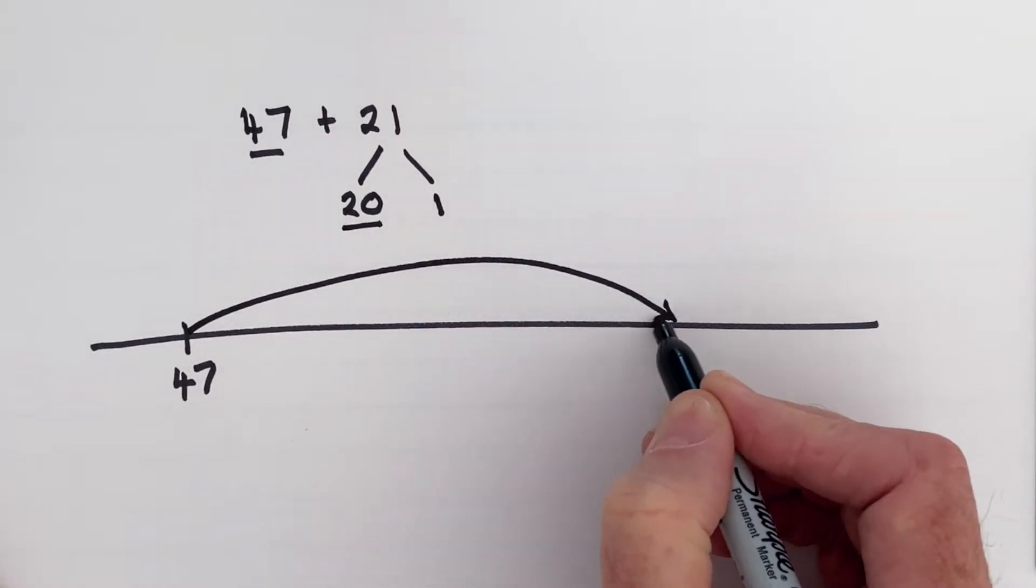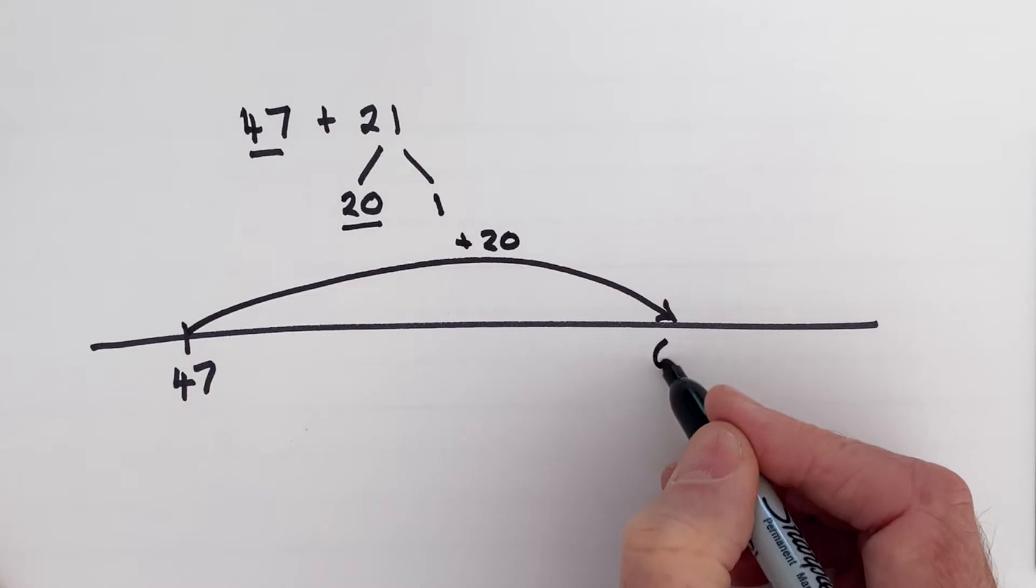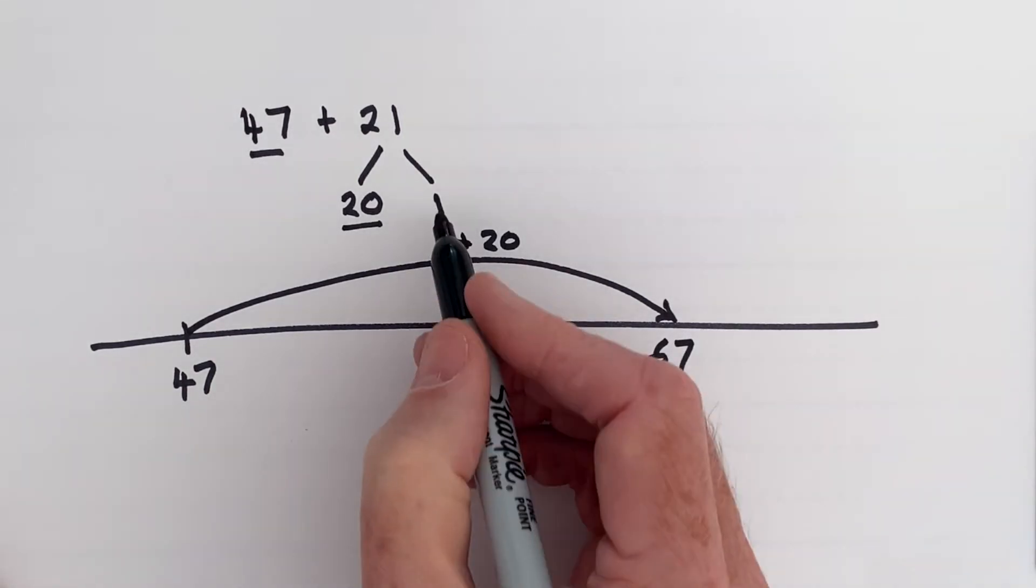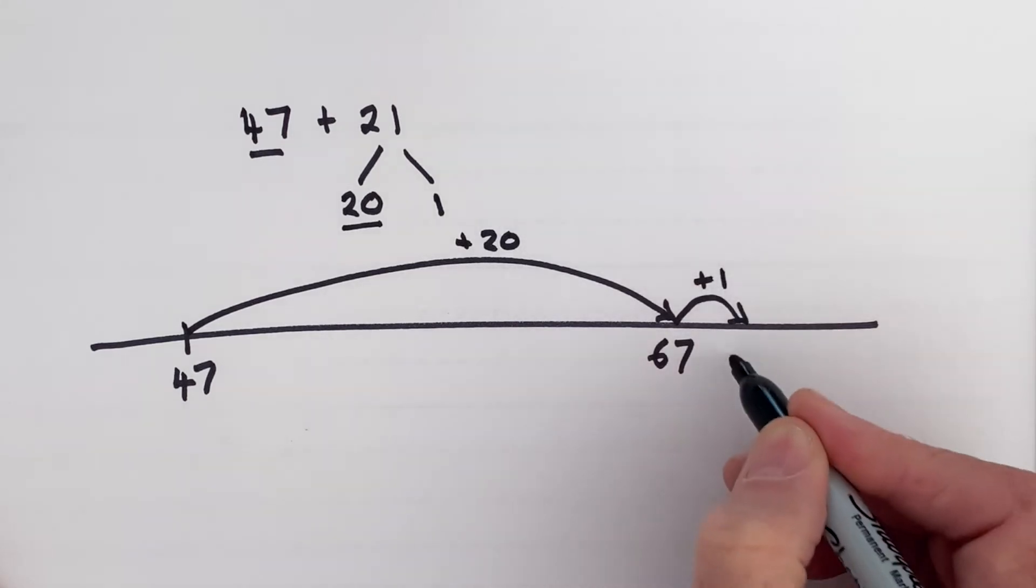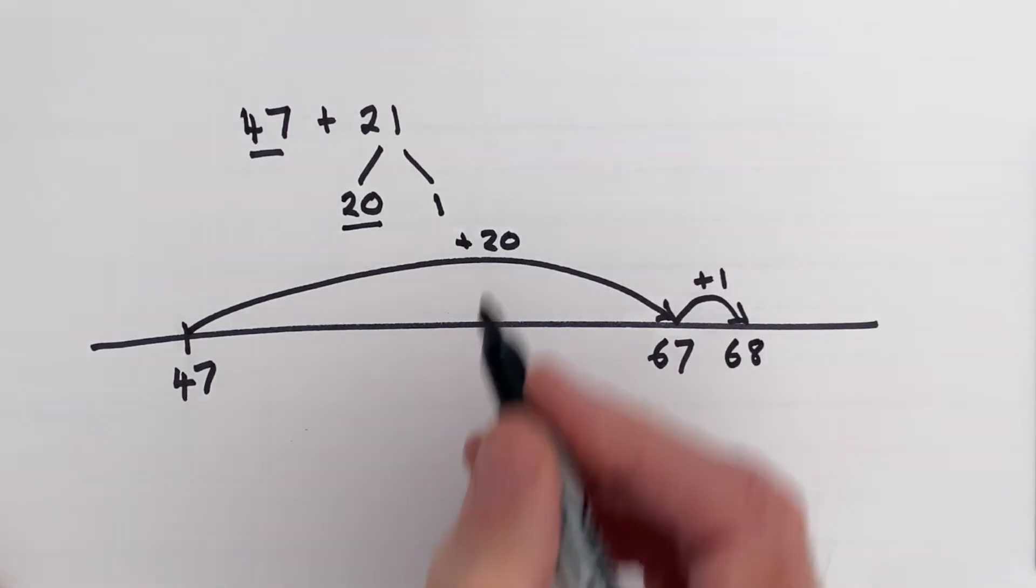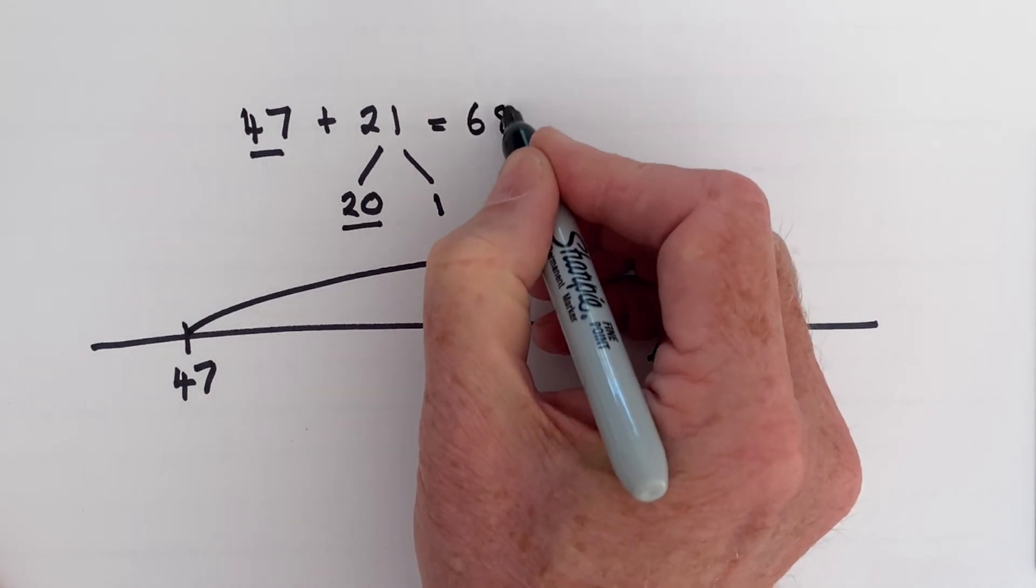And then we add the ones. Easy jump here, just a jump of one to 68. So 47 plus 21 is 68.